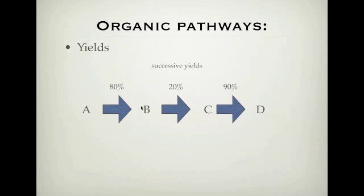A is converted to B, is converted to C, is converted to D. If reaction 1, A to B, is 80% efficient, reaction 2 is 20% efficient, reaction 3 is only 90% efficient, what is my actual percentage yield from A all the way through to D?